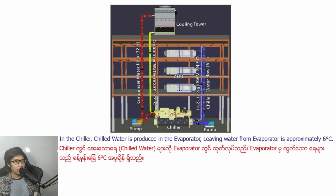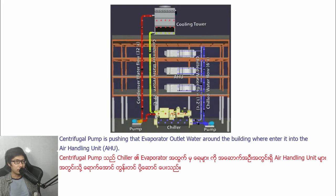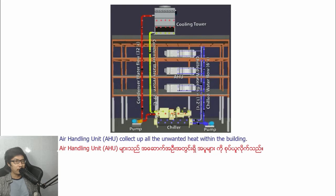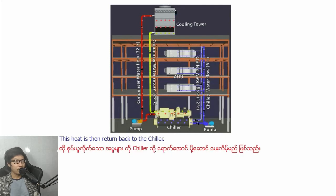In the chiller, chilled water is produced in the evaporator. Leaving water temperature from the evaporator is approximately 6 degrees Celsius. A centrifugal pump is pushing that evaporator outlet water around the circuit and into the air handling unit. The air handling unit cools the air and the water picks up the heat from the building.